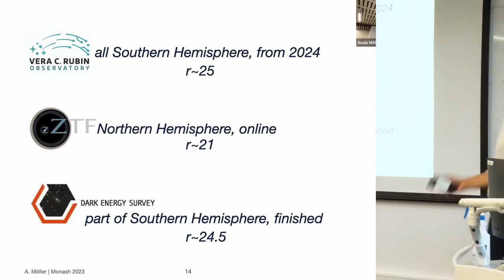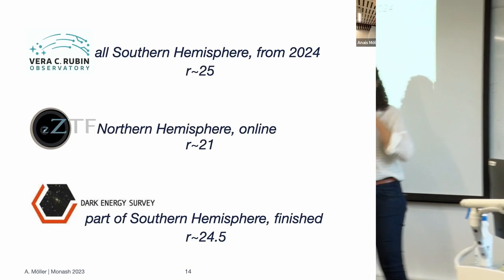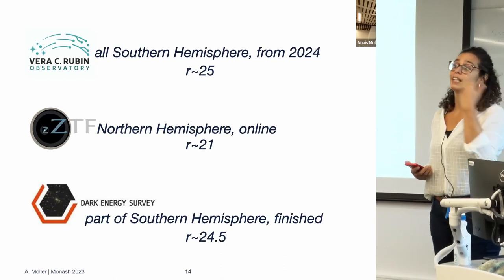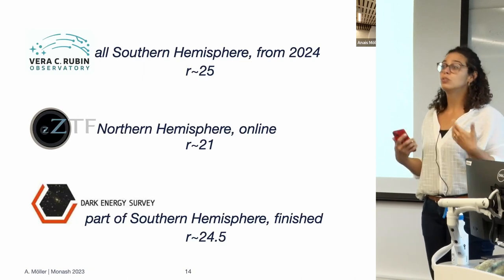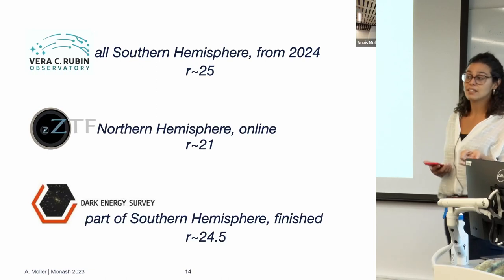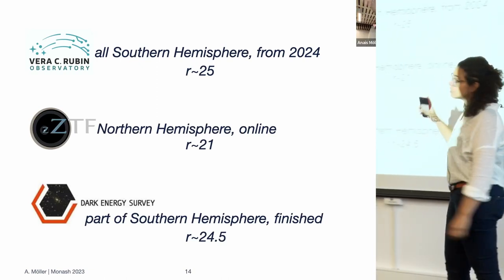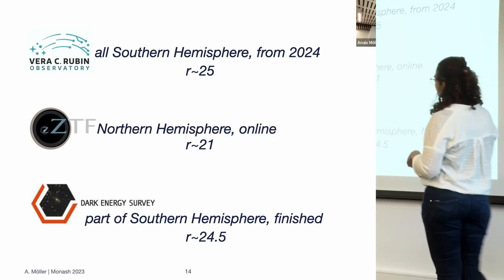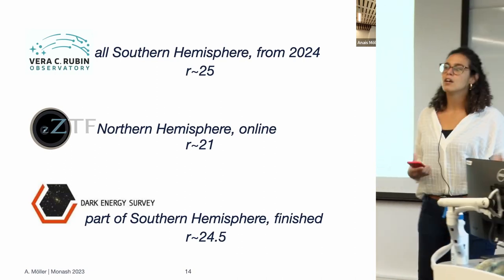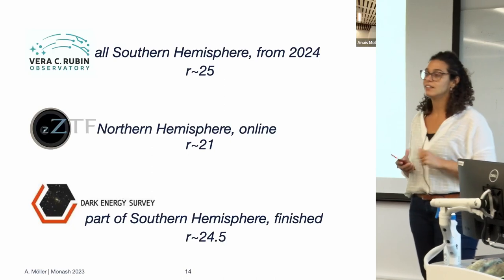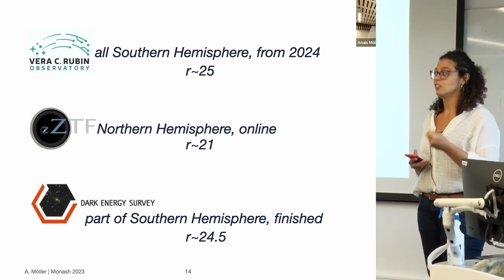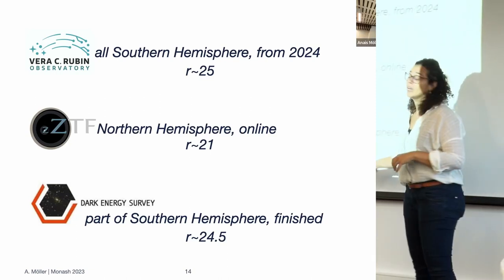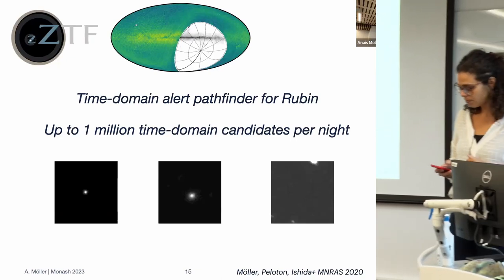Today I'm going to tell you about three surveys. The Rubin Observatory is what we're working towards — very deep at 25 magnitudes in a single exposure, covering the entire southern hemisphere, starting next year. Meanwhile we use data from other surveys to test Fink and different components like classifiers. I'll talk about the ZTF, the Zwicky Transient Facility — imagine it as something shallower in the northern hemisphere, like a prototype of Rubin — and also the Dark Energy Survey, which is already finished but had very tough cosmology classification standards.